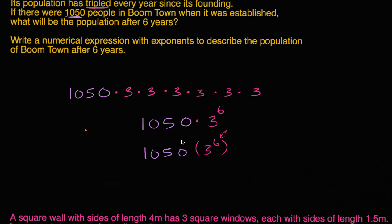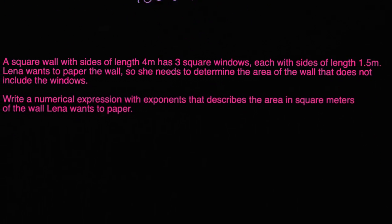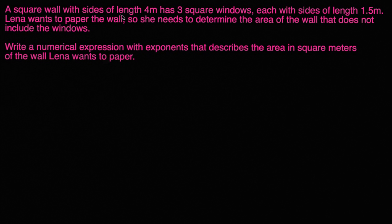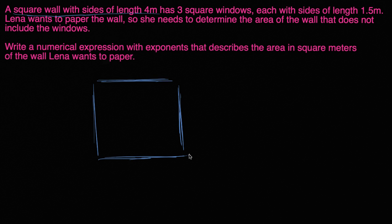Let's do one more of these. This is strangely fun. Alright. So we have a square wall with sides of length four meters. Let's draw our square wall with sides of length four meters. So it's a square wall. I'm sensing a lot of squares in this exercise, or these exercises. So I have a square wall with sides of length four meters. So this is four meters, and this is four meters.